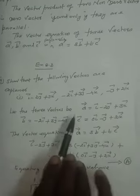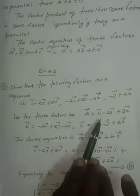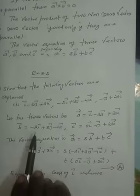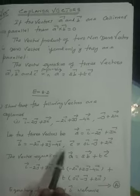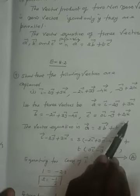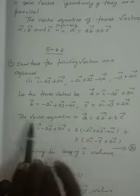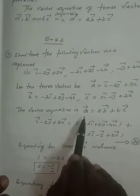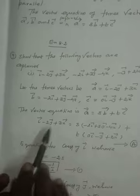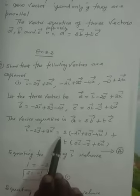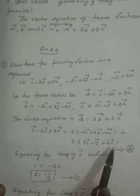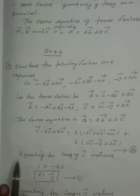Let the three vectors be: A vector equals I minus 2J plus 3K; B vector equals minus 2I plus 3J minus 4K; C vector equals 0I minus J plus 2K. The vector equation is A vector equals s of B vector plus t of C vector, where the first vector equals s times the second vector plus t times the third vector.